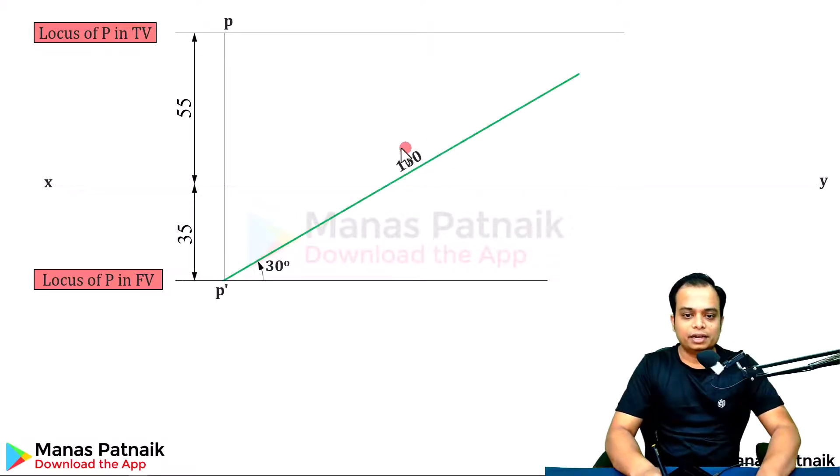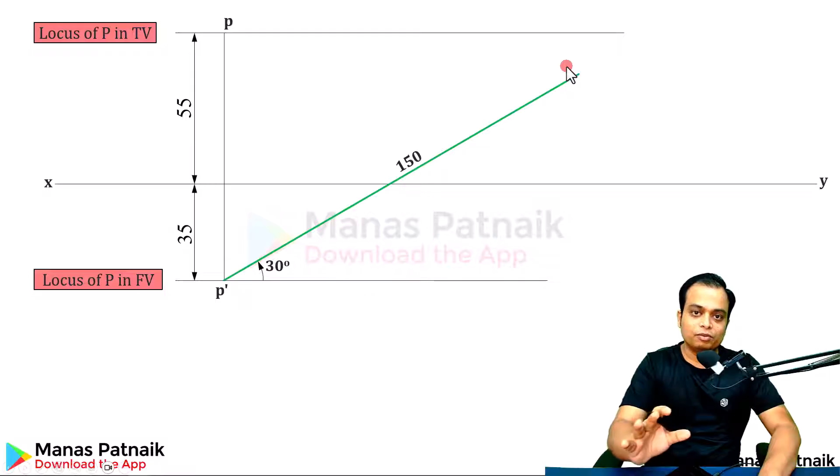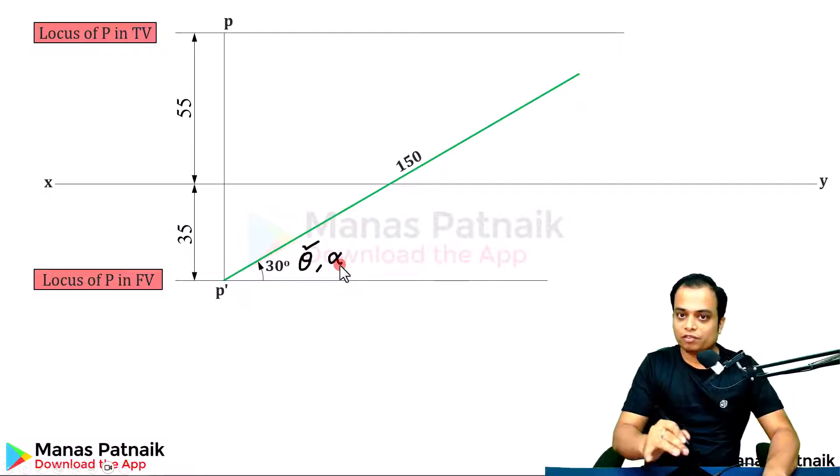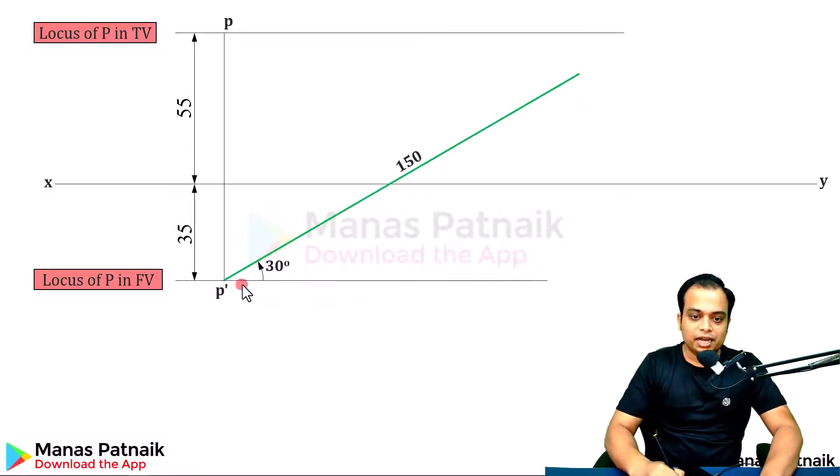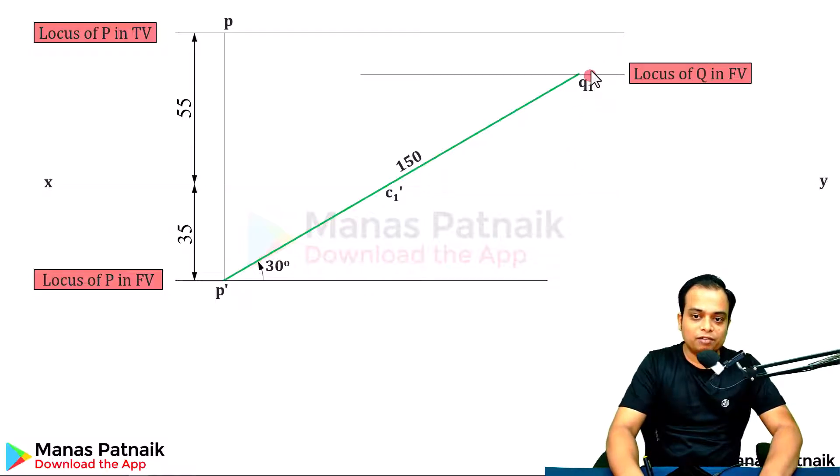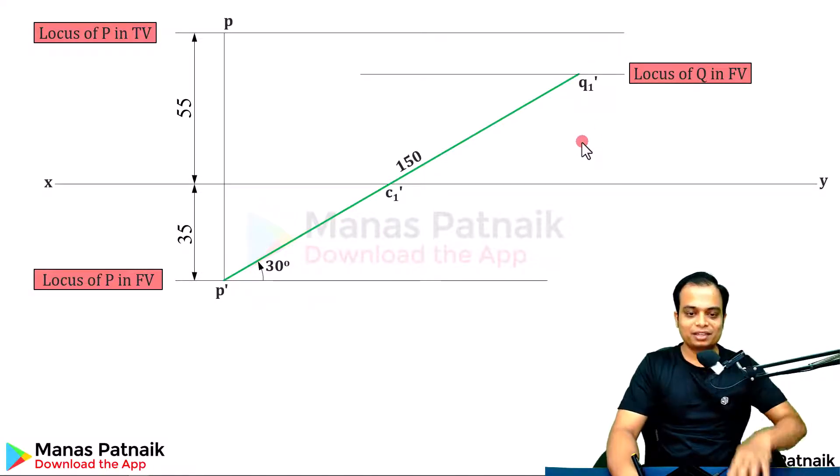With respect to point P dash, at an angle of 30 degrees, draw a line. The length is true length. How much? 150. This is P dash. All the points along this line will have a dash. This is front view, not the final front view. The final front view is drawn with an angle alpha. If this is P dash, wherever it intersects this reference line, we can call that C1 dash. This point has to be end Q, and its front view is above XY. If the front view is above XY, that means it's a case of first quadrant.